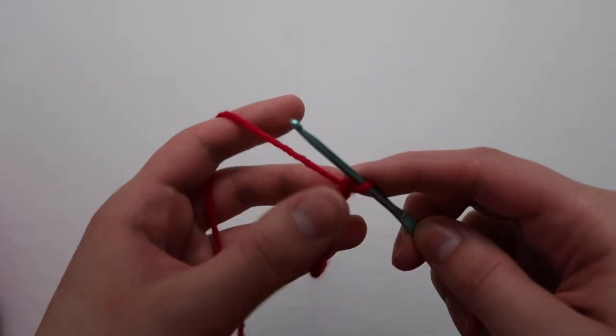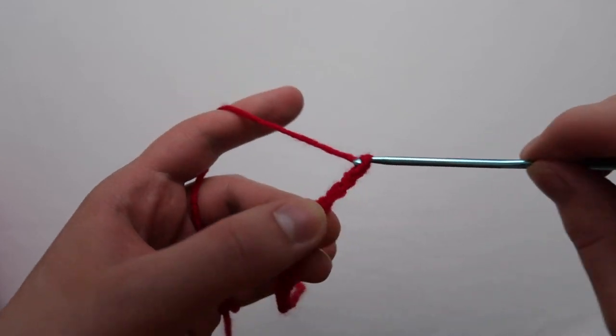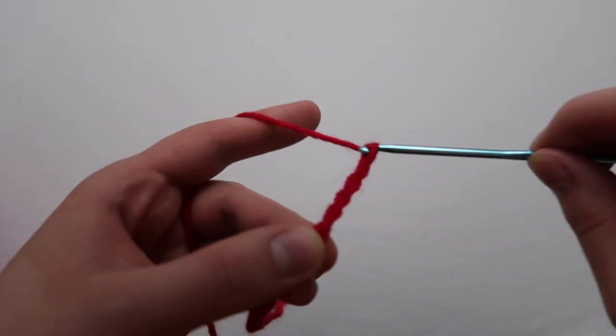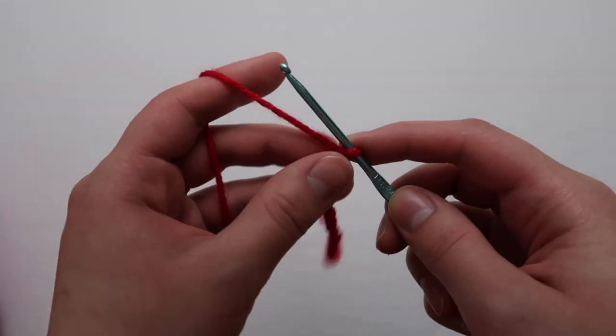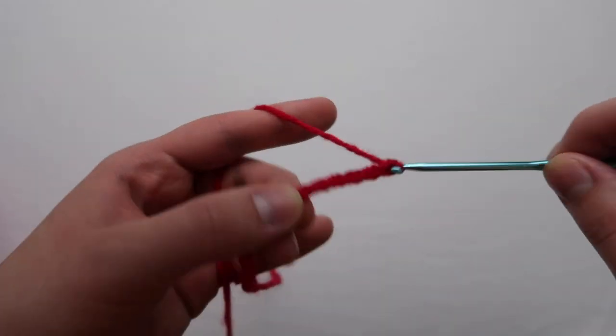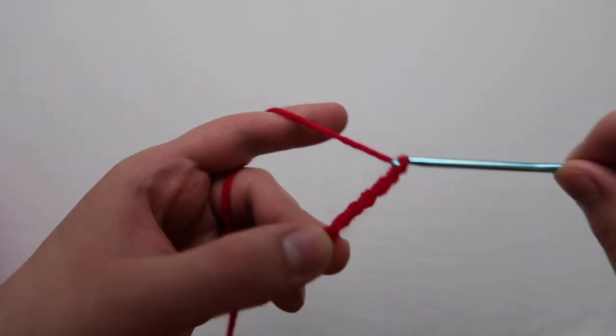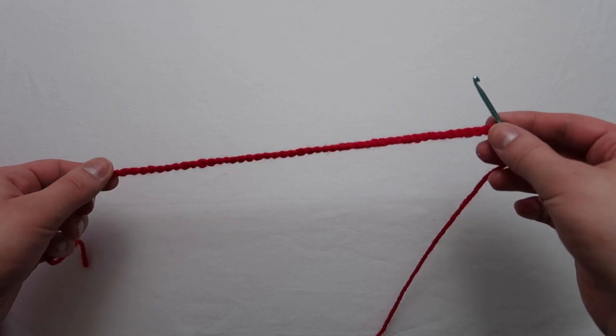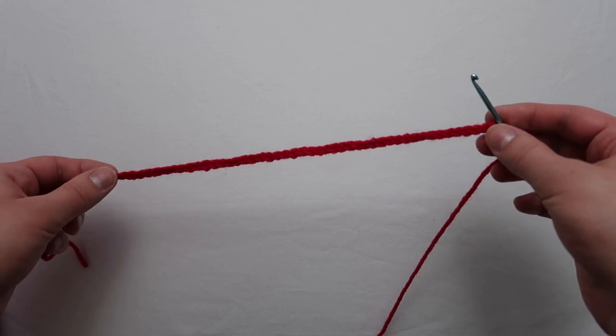The hat measures at 8 inches uncuffed. If you need to make it longer, all you have to do is add extra chains. I would probably go like five at a time. You can lay your chain against a tape measure, just be aware that it will shrink a little bit.